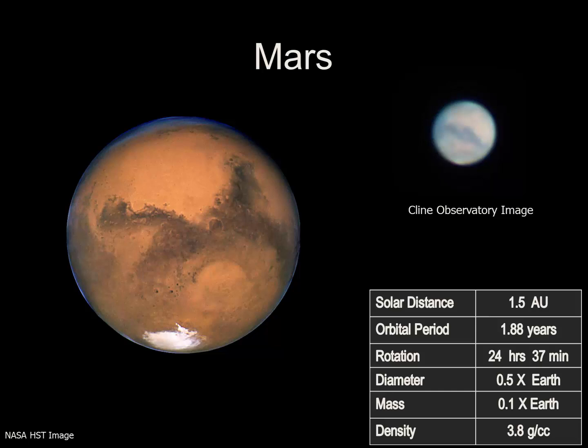Mars orbits at a distance of 1.5 times the Earth. It has an orbital period of 1.88 years — that's 687 days. Its rotation is very similar to that of the Earth, at 24 hours, 37 minutes. It's a good bit smaller, at 50% of the Earth's diameter, and its mass is only 10% that of the Earth, giving Mars a density of 3.8 grams per cubic centimeter. Partially because there's no magnetic field, Mars has a very thin atmosphere, only 1% that of Earth. The atmosphere is composed largely of carbon dioxide, with small amounts of nitrogen.